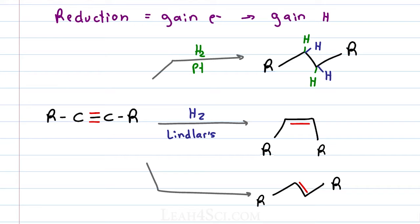This will break just one pi bond and add two hydrogen atoms syn to each other on the same face of the molecule, putting the two R groups syn to each other on the other face of the molecule for a cis product.